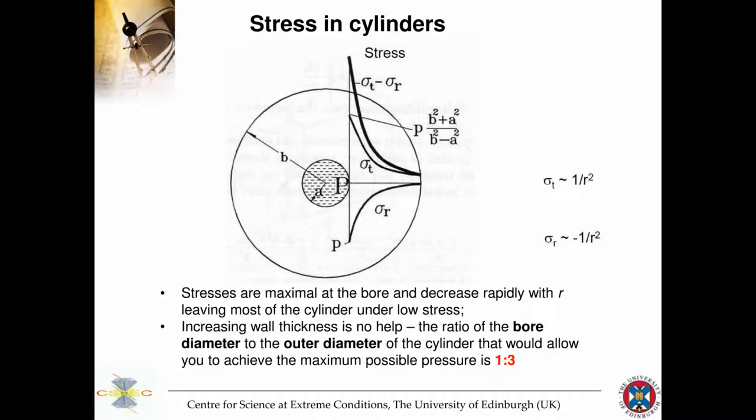You can see from this diagram that increasing wall thickness is no help. You might think that the thicker the cylinder, the higher the pressure you can achieve — but that's not true. The problem is that as you start creating higher pressures on the bore surface, you reach the plastic deformation limit, and a chain reaction starts: the bore expands and effectively the cylinder bursts. So independently of how thick the cylinder is, there is a limit on the bore. The larger the bore, the higher the hoop stresses, and therefore the sooner it will fail under pressure.